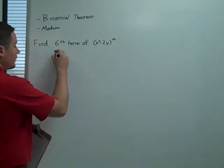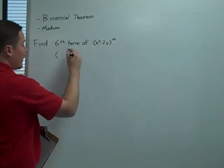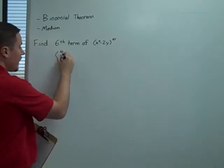So, the first thing is that coefficient. It's 10, choose not 6, but 6 minus 1, which is 5.